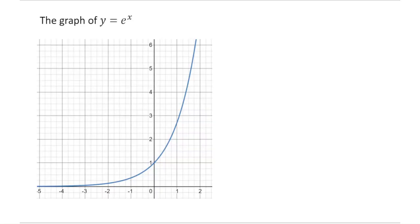Firstly, this is the graph of y equals e to the x. I'm just going to start by showing you, but let's try to explain why it looks like that. First thing to point out is this is actually the same as any exponential graph — for example, y equals 2 to the x, it's the same basic shape. Well, when x is equal to 0, then e to the power of 0 is equal to 1, because anything to the power of 0 is equal to 1. So we expect that to be our y-intercept.